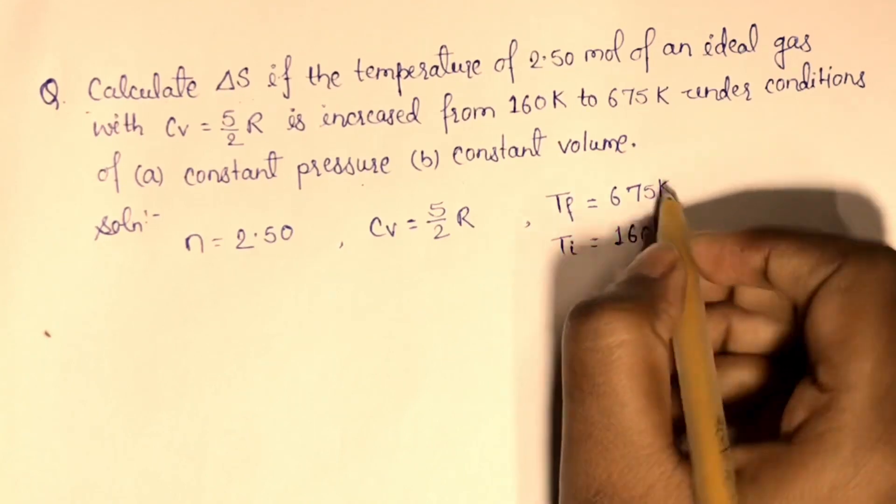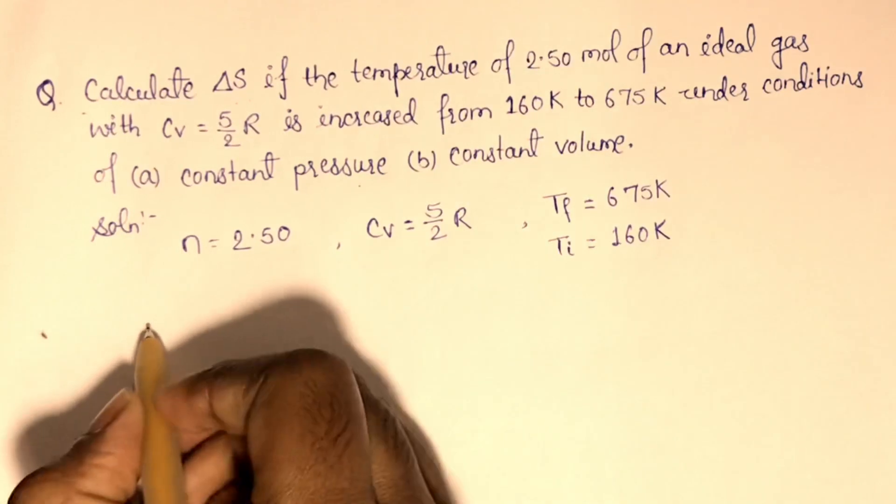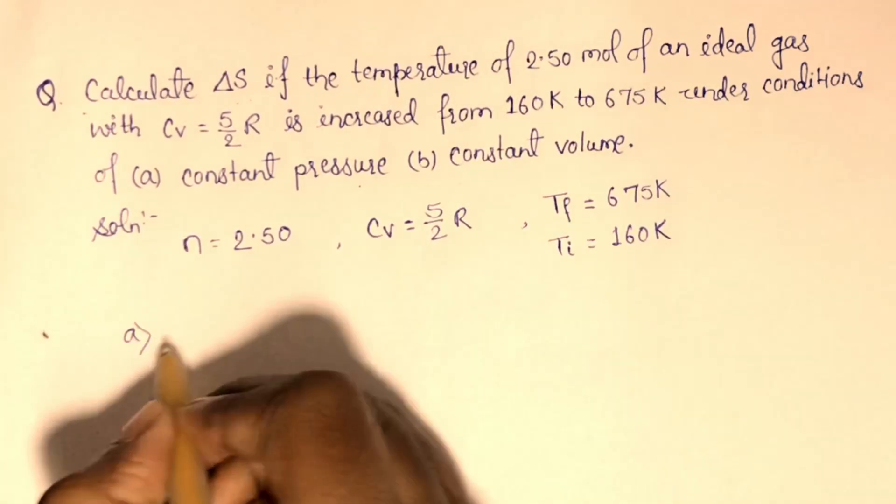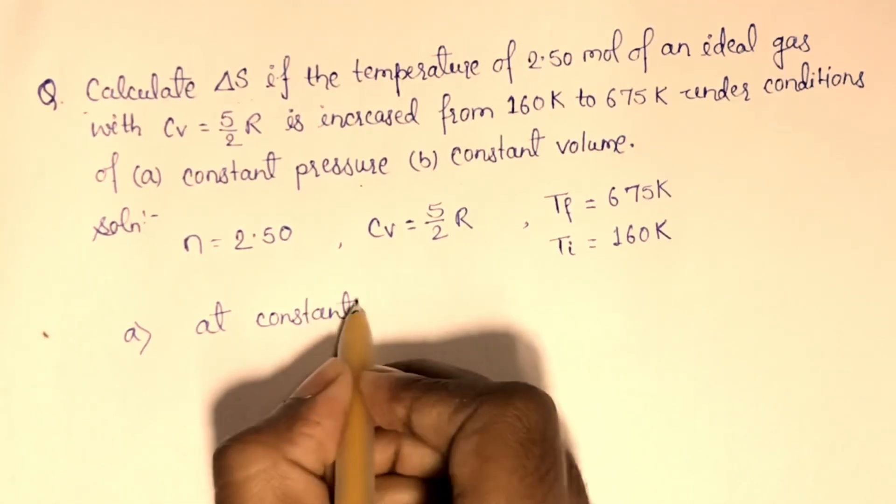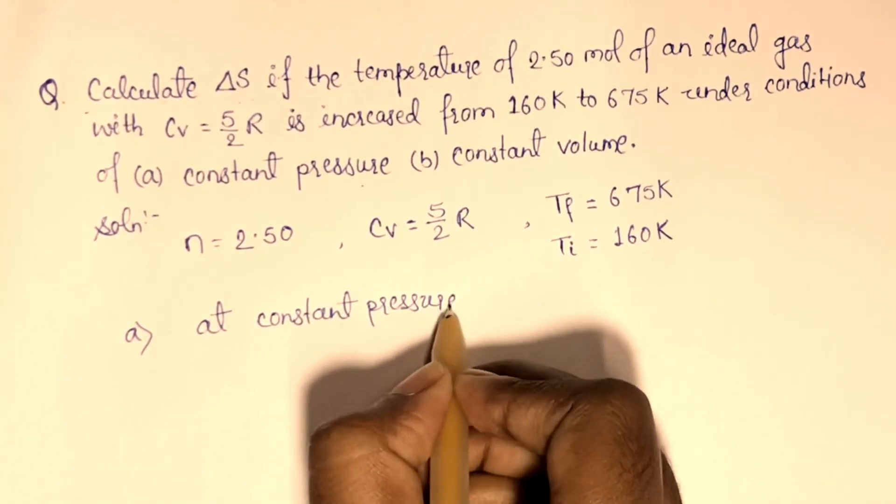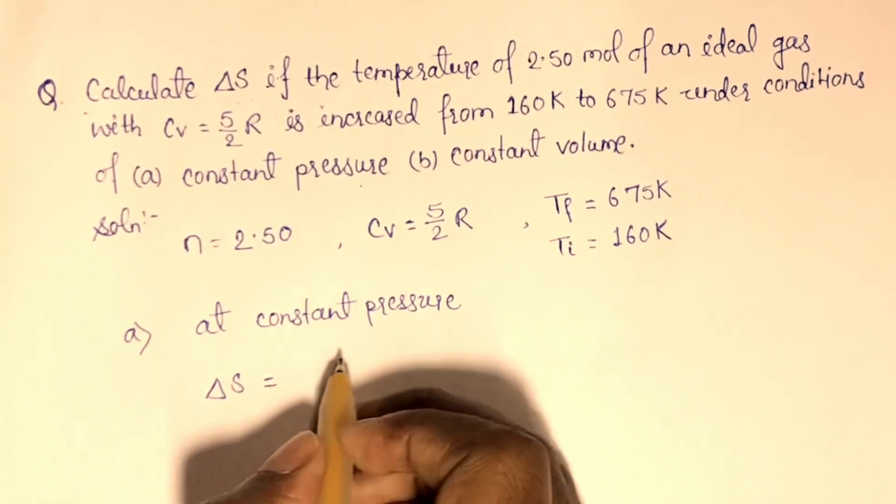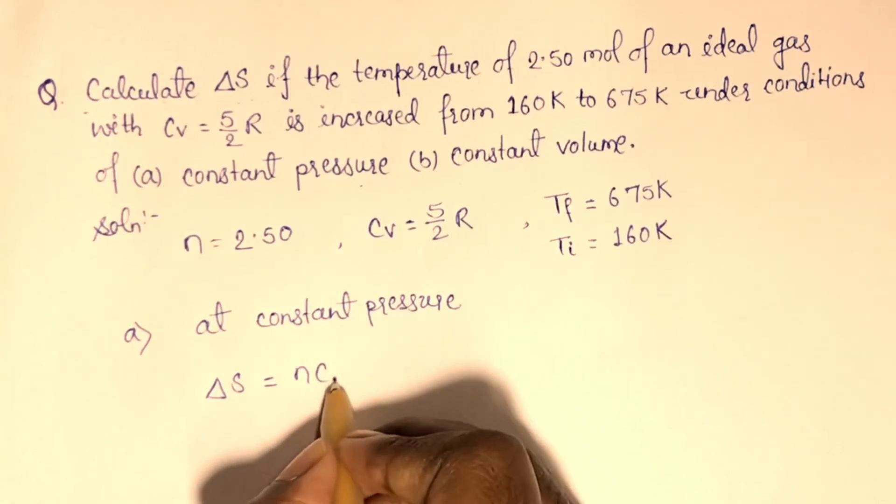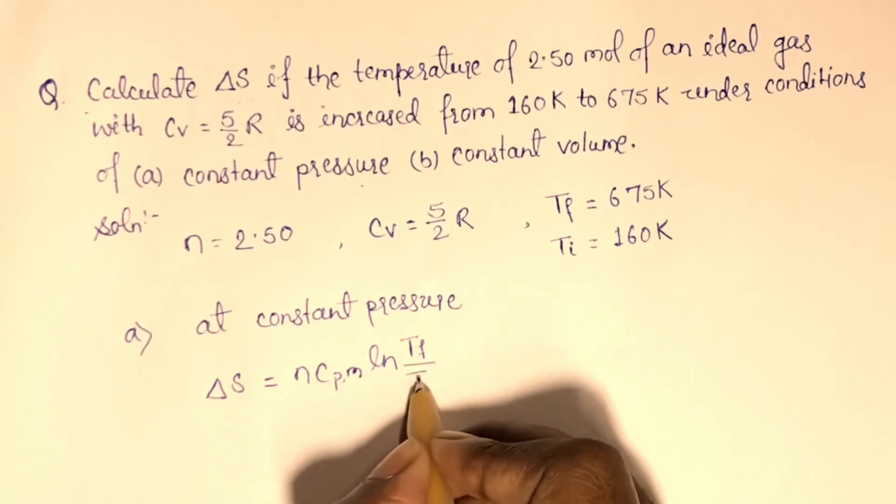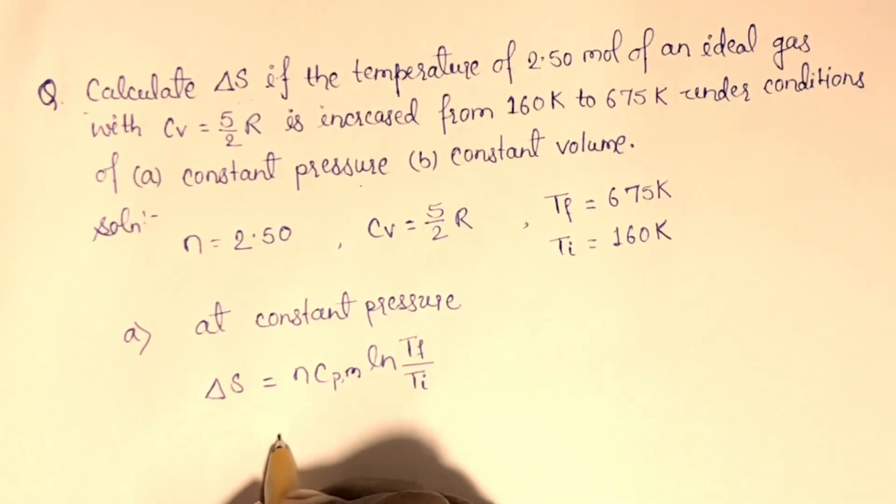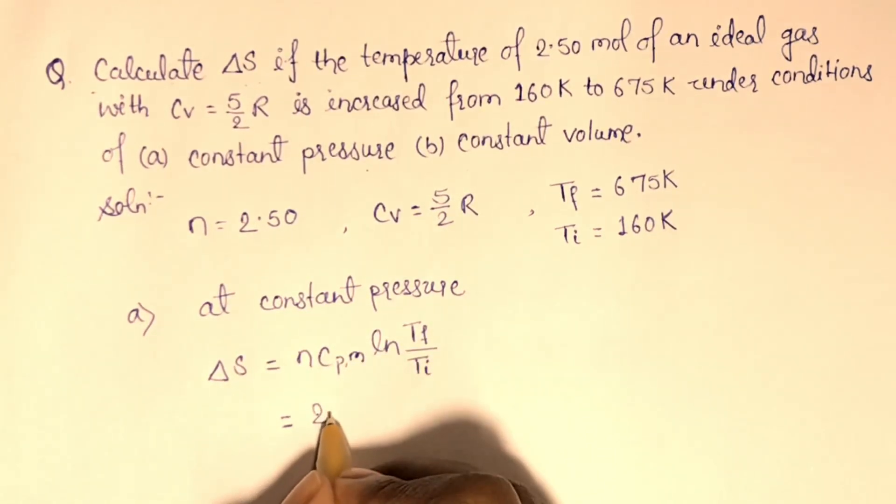Now we will calculate entropy change for constant pressure. At constant pressure, as we know, the entropy change for constant pressure process is N CPM ln T final upon T initial. Here the values are given, N equal to 2.50, CPM...